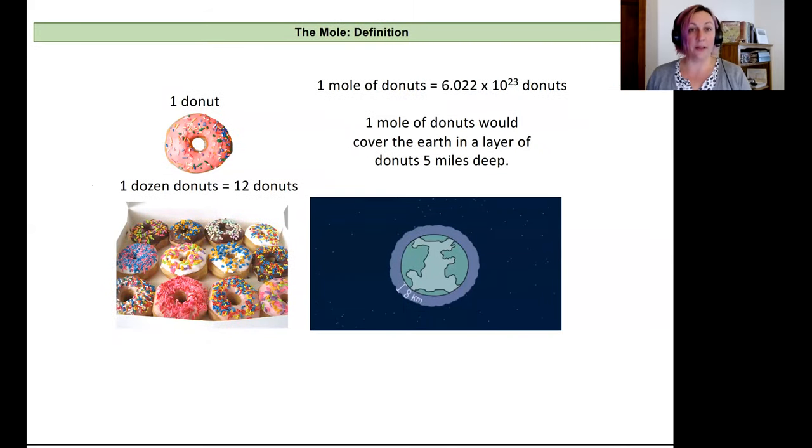And so this is my favorite way of thinking about it. So donuts. Donuts are, maybe they're not more interesting than molecules, but they are more delicious. So I can have one donut, that's okay. I can have a dozen donuts, and I would have 12, and then I could share them, and that would be great. But I could also have a mole of donuts. A mole of donuts would be 6.022 times 10 to the 23rd donuts. And if I had that many donuts, which would be amazing, I would be able to layer the earth five miles or eight kilometers deep in donuts. Like the entire earth is just donuts five miles up into the sky. So it's a big number. That's the point.